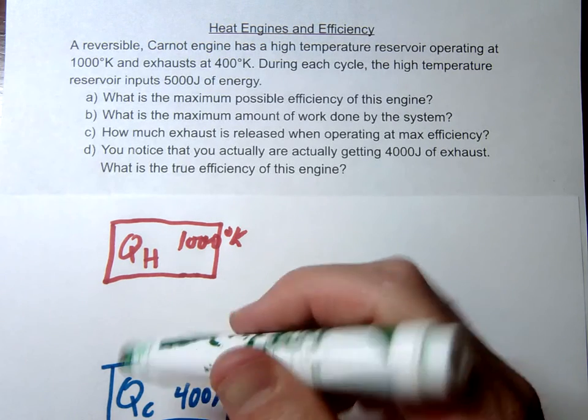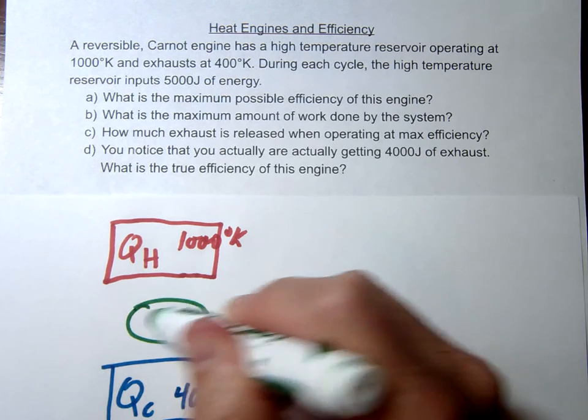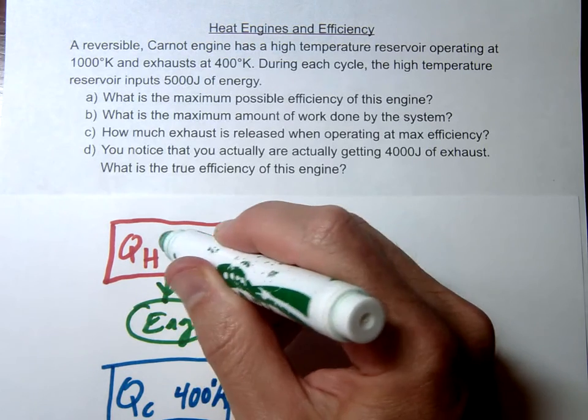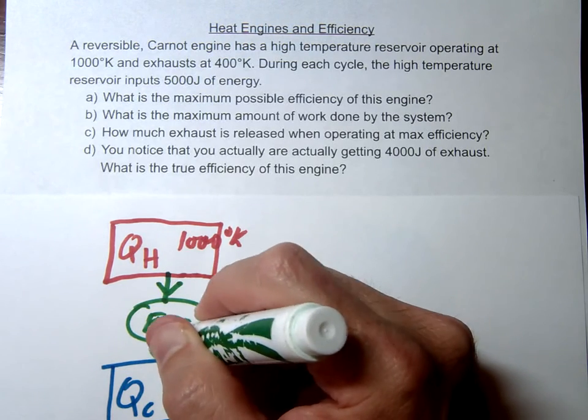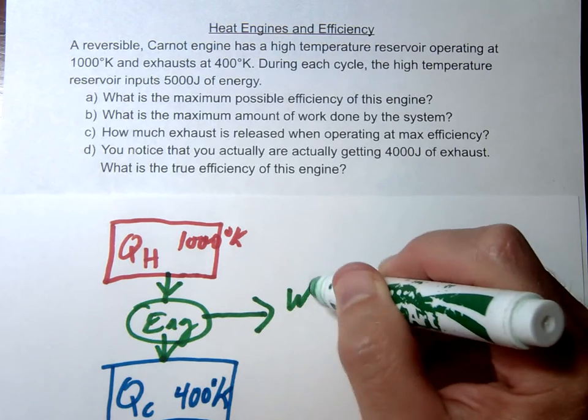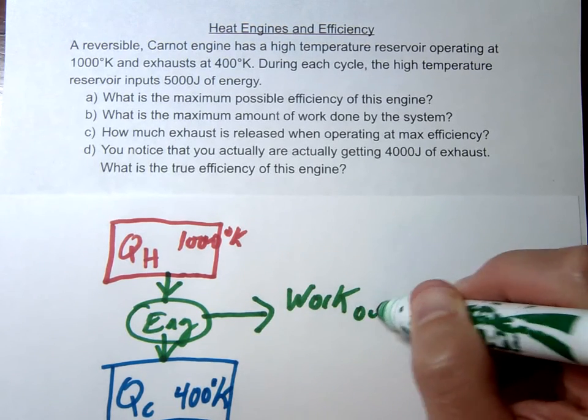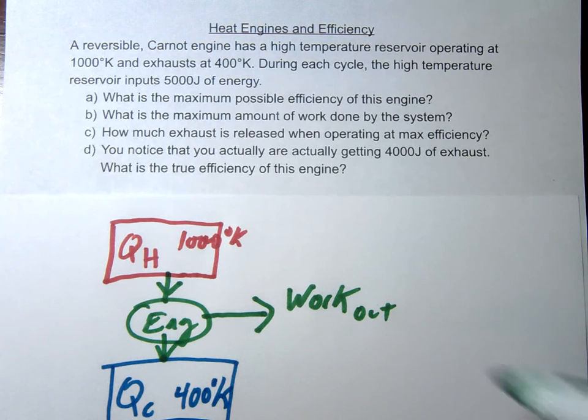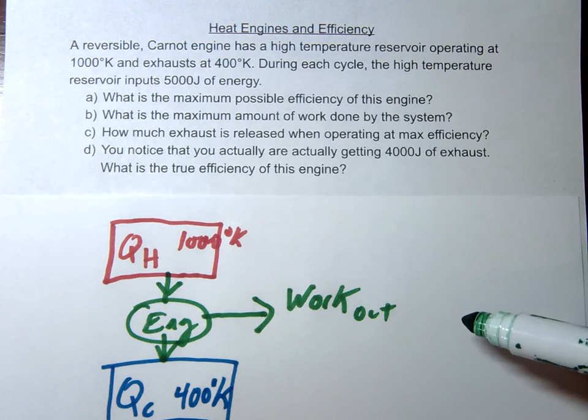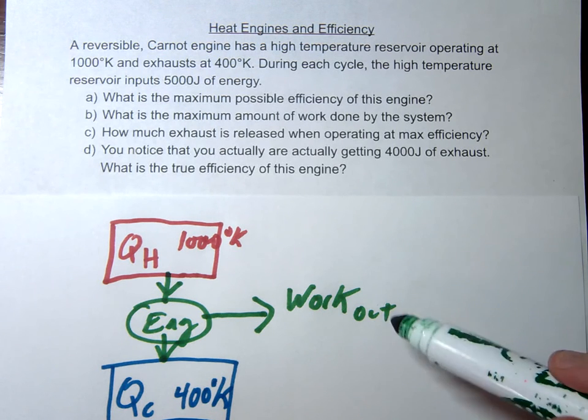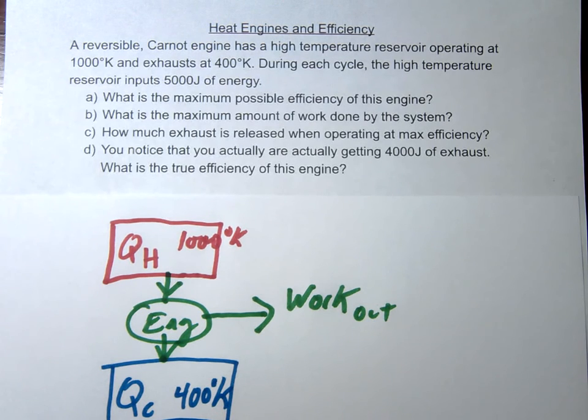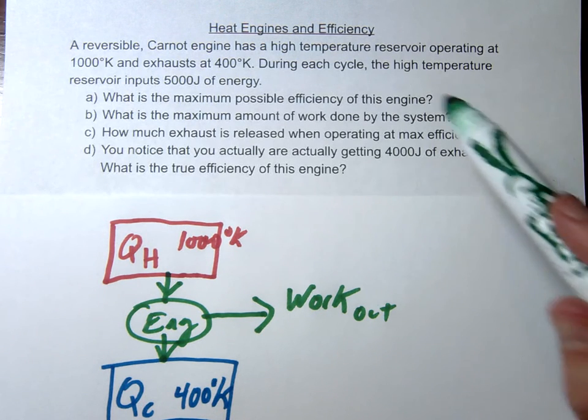And then the key idea is, here's our heat engine, and we're going to use the heat going from hot to cold, and along the way we're going to get some usable work out of it. So this is the work out that we're trying to get, and this is always work done by the system. I know mathematically when we did PV diagrams that would be a negative, but we're just going to go ahead and make it positive, take the absolute value for these.